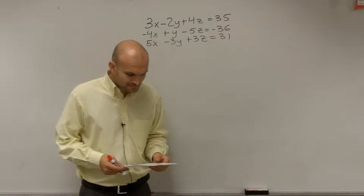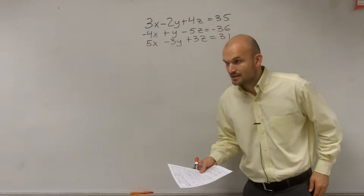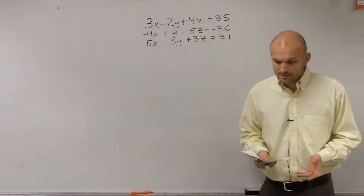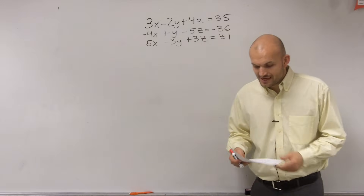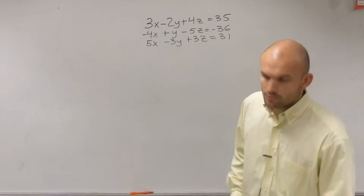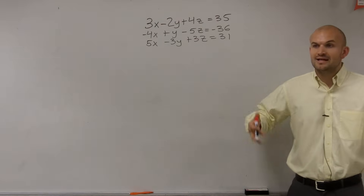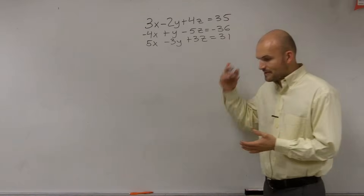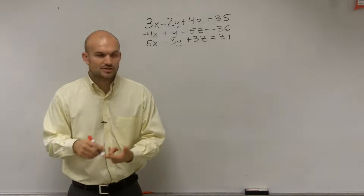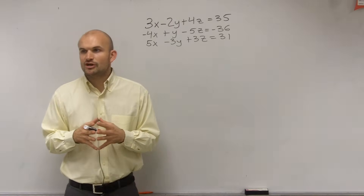The first step is to eliminate one variable by using two pairs of equations, and then to create a system of two equations and two variables. So we want to pick a variable that we can eliminate. Just by looking at those variables, what do you guys think might be one of the easiest variables to eliminate?